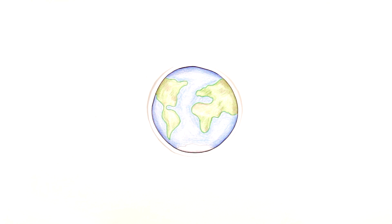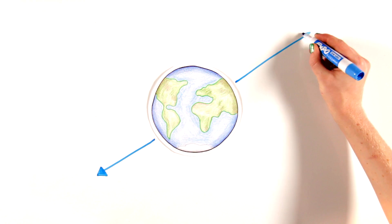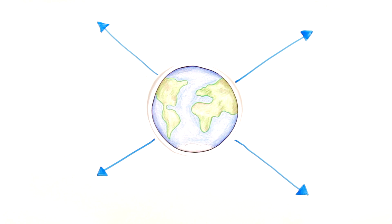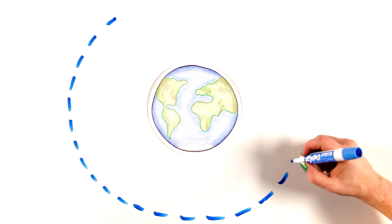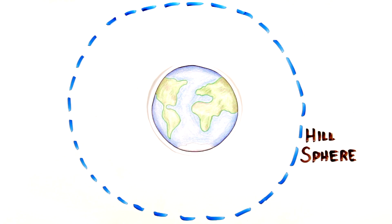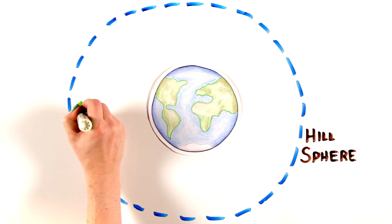When you talk about gravity, you also need to talk about how far out into space a body's gravitational field extends. Theoretically, a body's gravitational field extends infinitely into space. The area around a body in which its gravitational influence is more dominant than other bodies in the space is called the hill sphere.